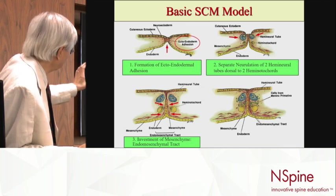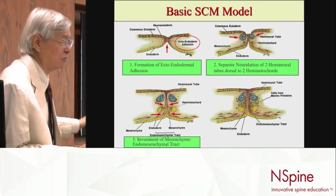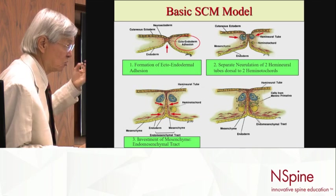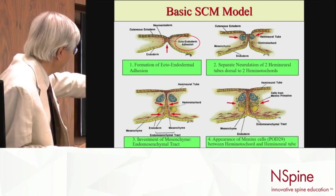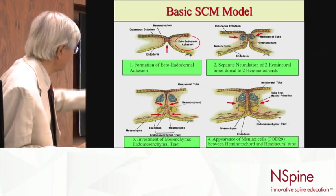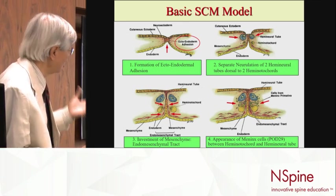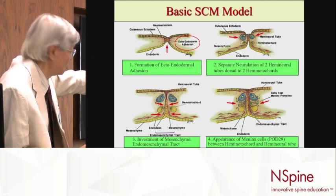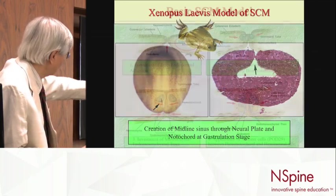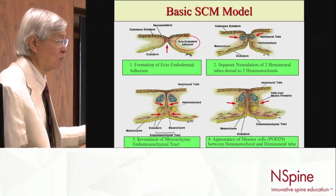After formation of the hemichords, other cells creep into the midline septum. These are mesenchymal cells, which can form mesodermal elements — fibrous structures, blood vessels, cartilage, bone. The last stage involves meningeal primitive cells, which normally form meninges as a single tube around the single neural tube. In split cord, they are divided into two groups, one around each hemichord.